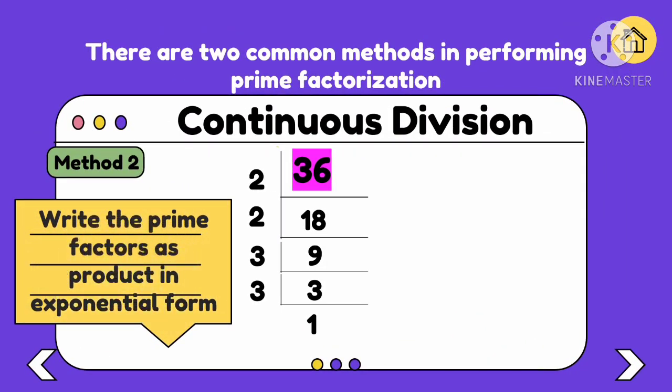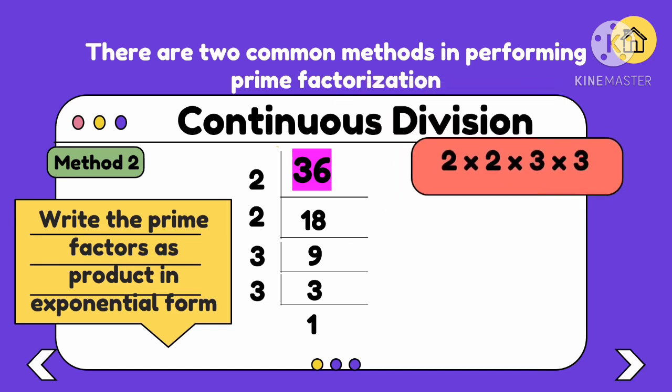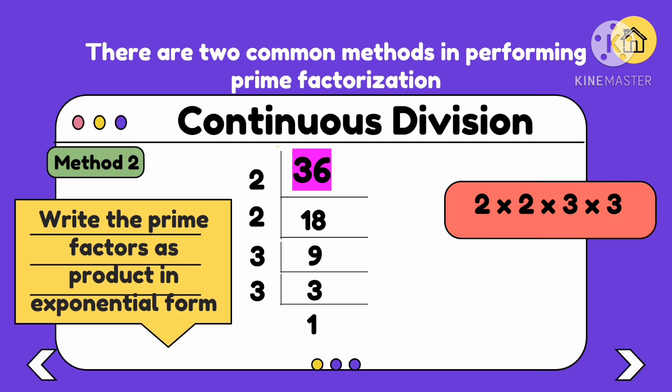We can now write the prime factors as product in exponential form. What are the prime factors we got? 2 times 2 times 3 times 3. Or, when expressed in exponential form: 2 squared times 3 squared. We used different methods but still arrived at the same answer.